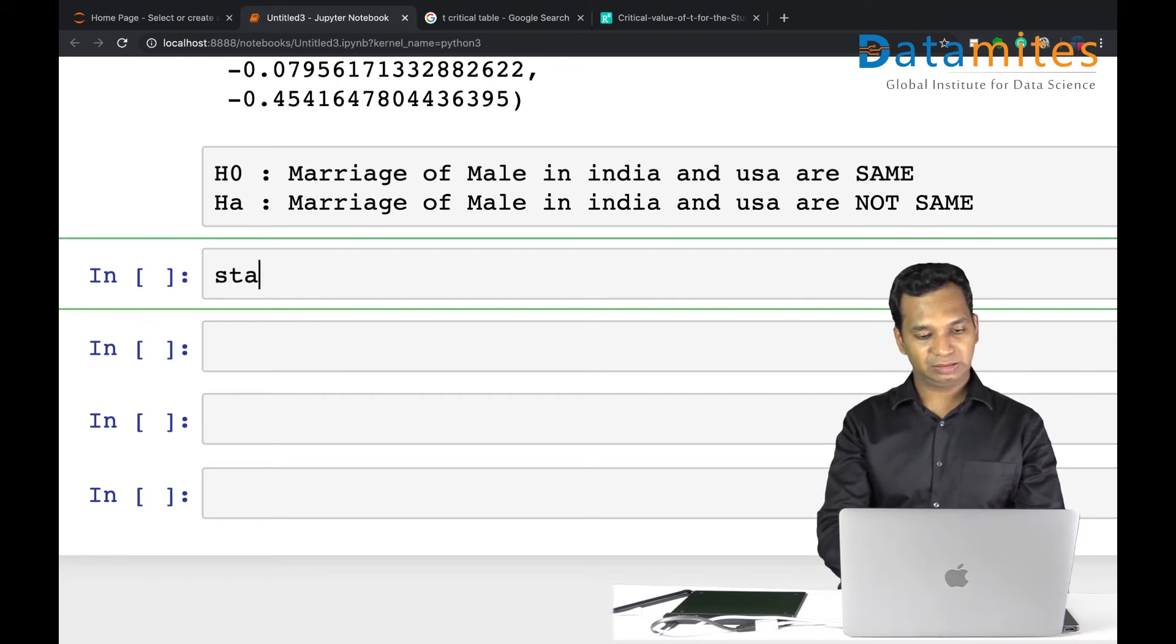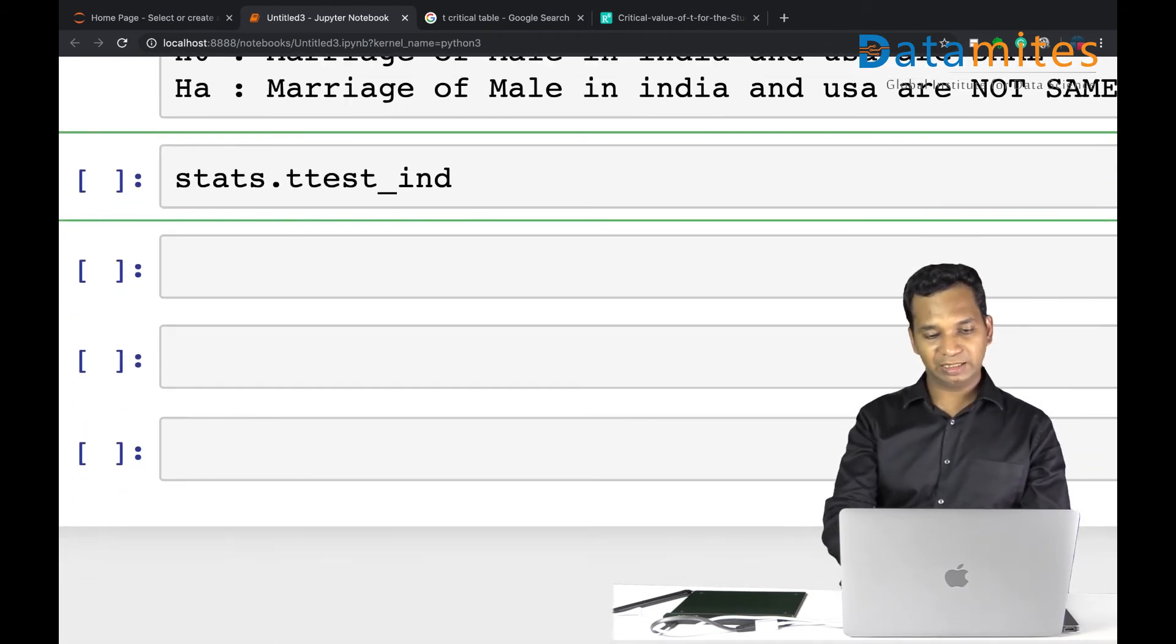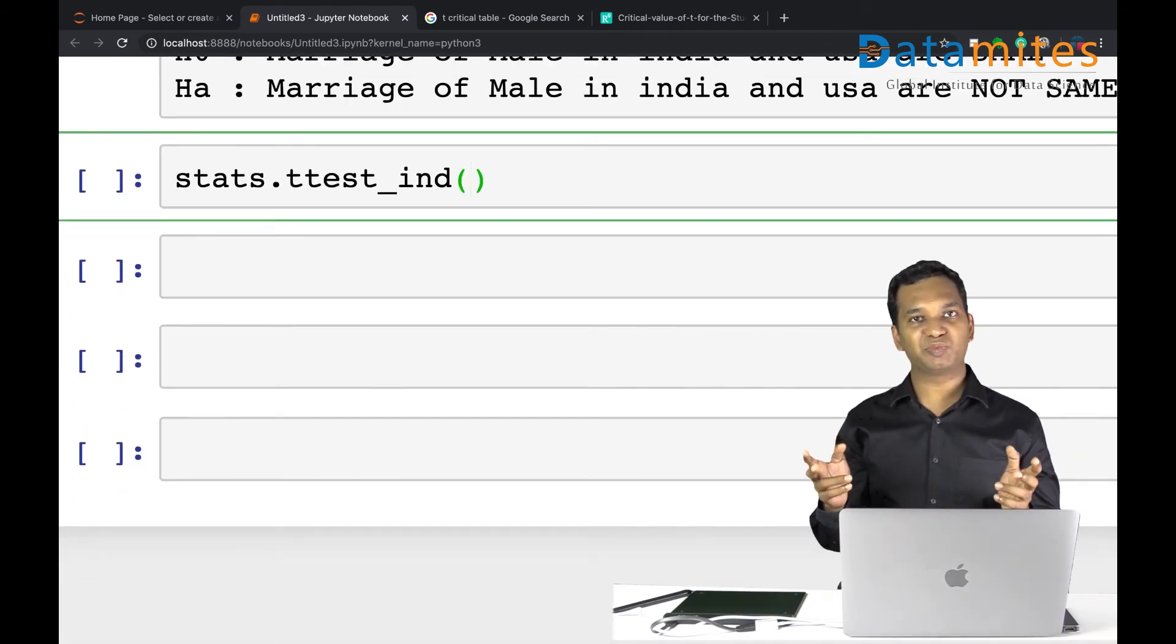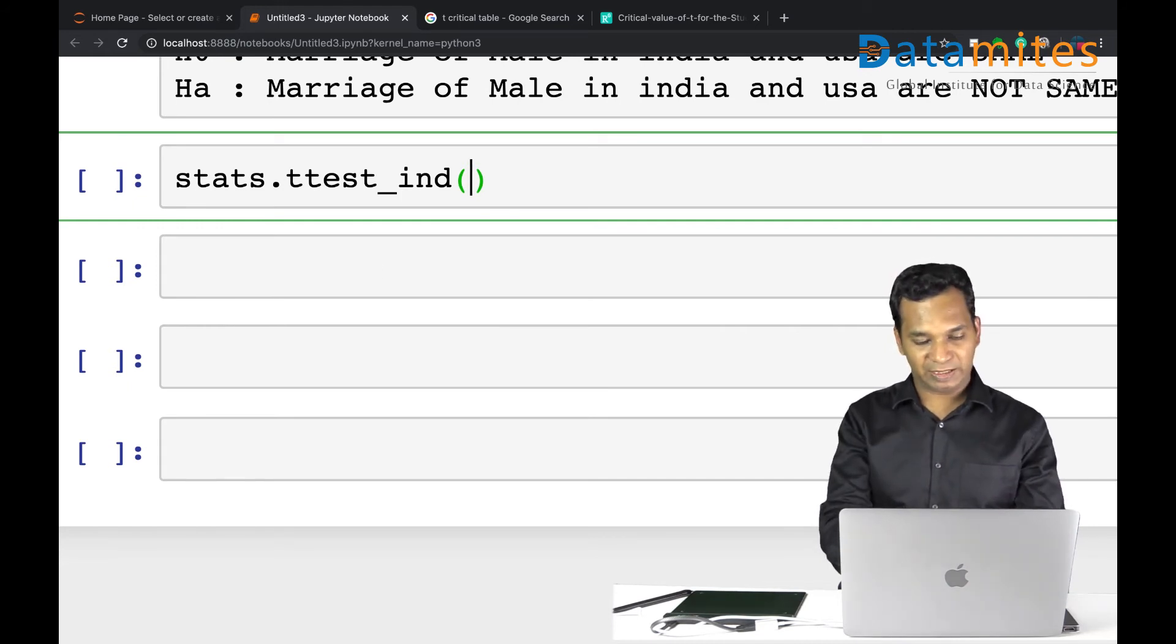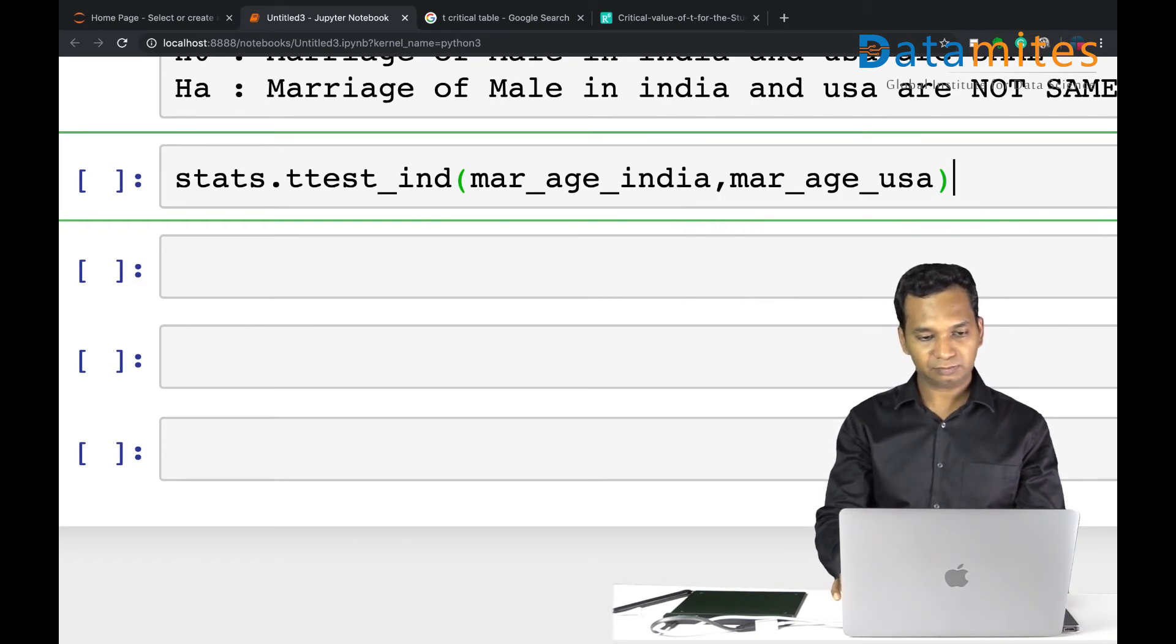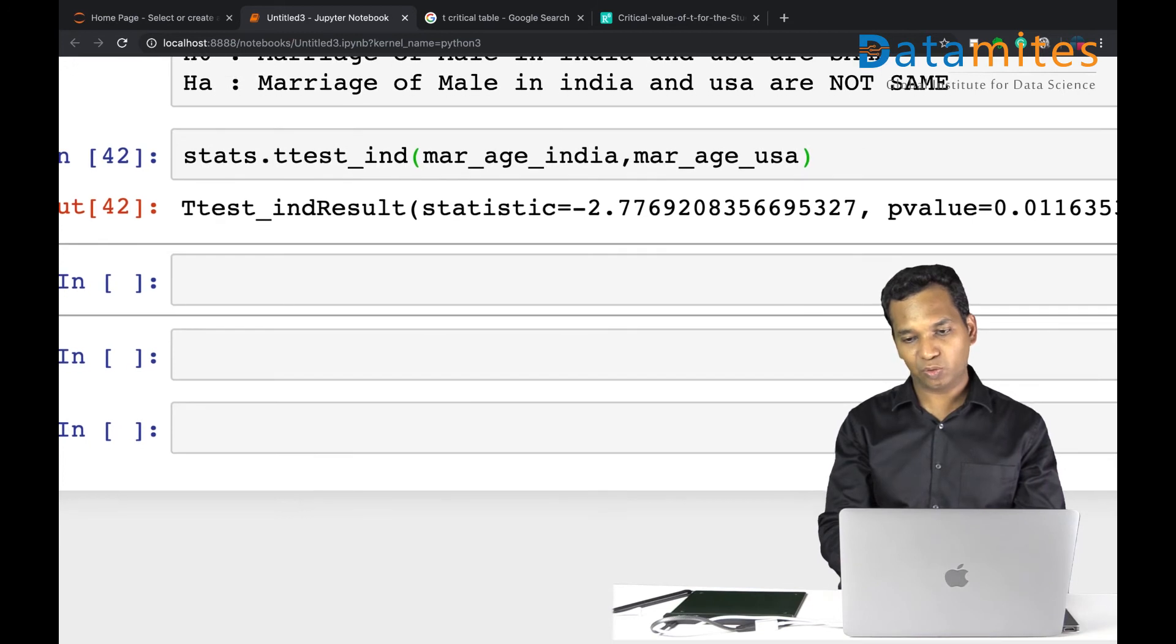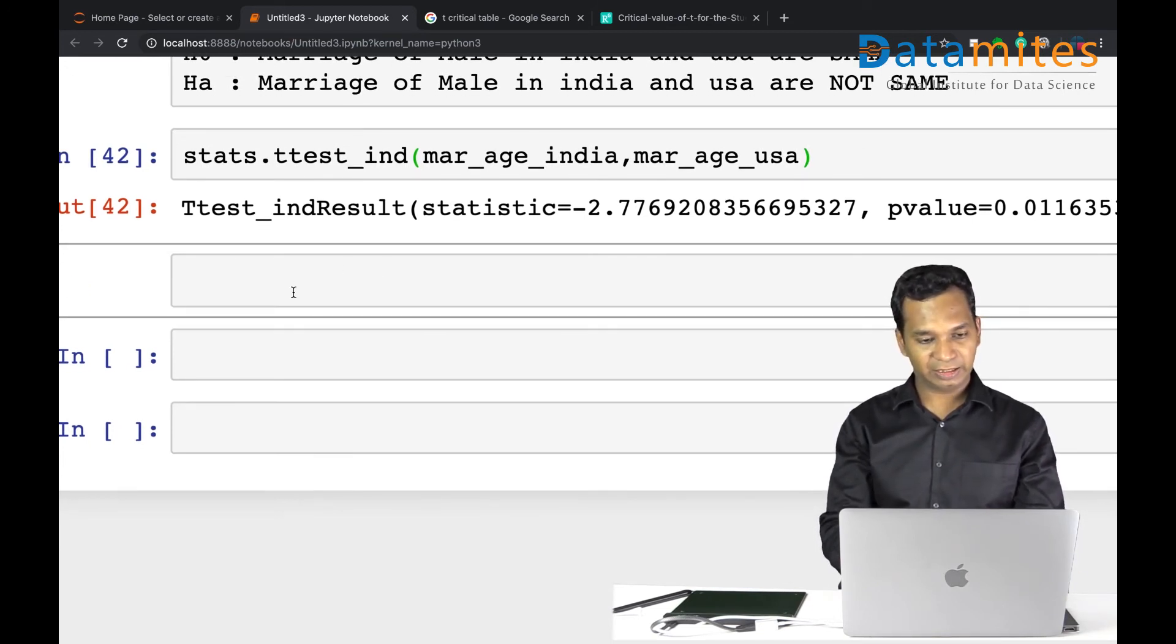So there is a module called t-test independent, ind, as you can see here. And this module compares two data distributions, comes up with the probability value. You know, the same or not same. So marriage in India and marriage in USA. You run it, your p-value is actually 0.01.